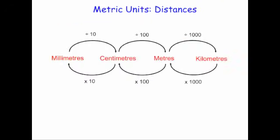So here we've got the units: millimetres, centimetres, metres, and kilometres. To go from millimetres to centimetres you divide by 10 — for instance, 80 millimetres would be 8 centimetres. To convert between centimetres and metres you divide by 100 — as we know, 100 centimetres equals 1 metre. To convert between metres and kilometres you divide by 1000 — so 1000 metres equals 1 kilometre.